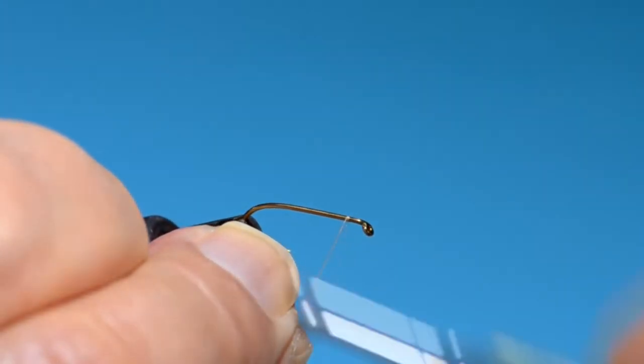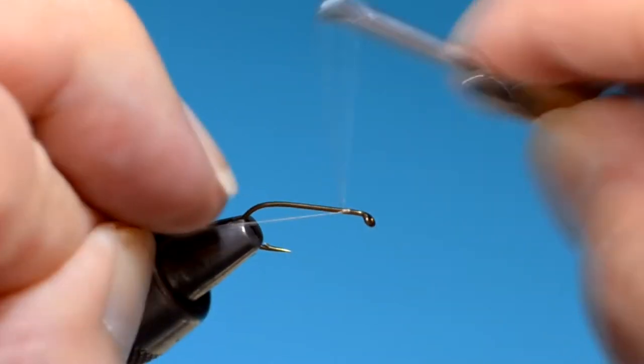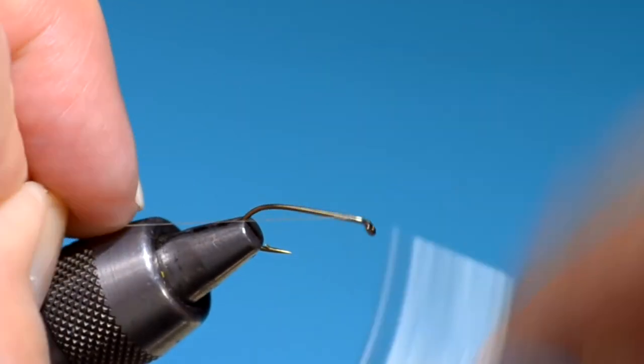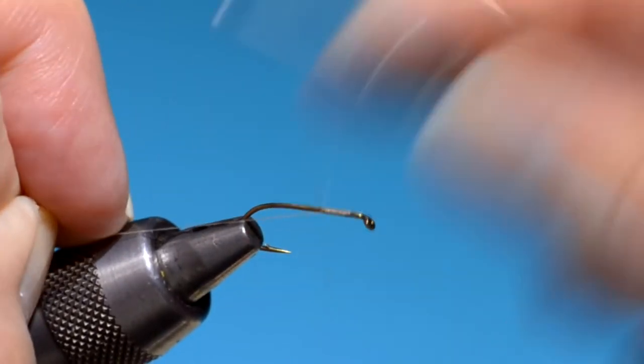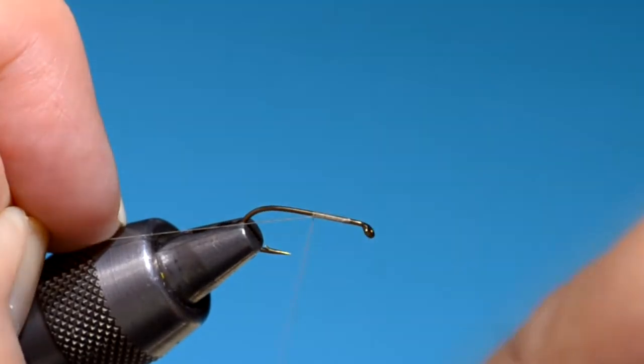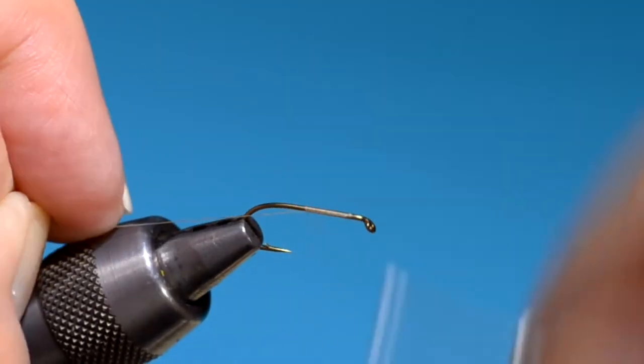This thread is tan, 8-ought, uni-thread. I know uni makes it in light Cahill color, but I've always used tan.